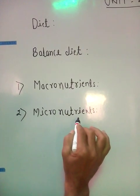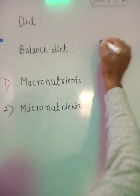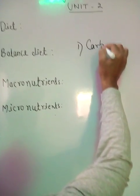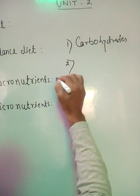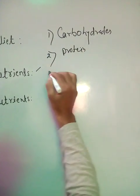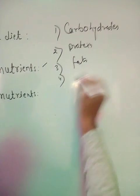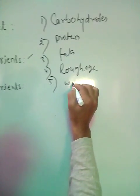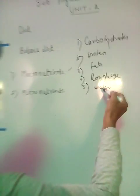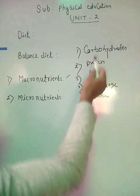Like vitamins and minerals - that is the big difference between macronutrients and micronutrients. Under macronutrients, the components are: first, carbohydrates; second, proteins; third, fats - including roughage; and also water. Carbohydrates, proteins, fats, roughage, and water are the main sources of energy that we take every day, even three times a day.